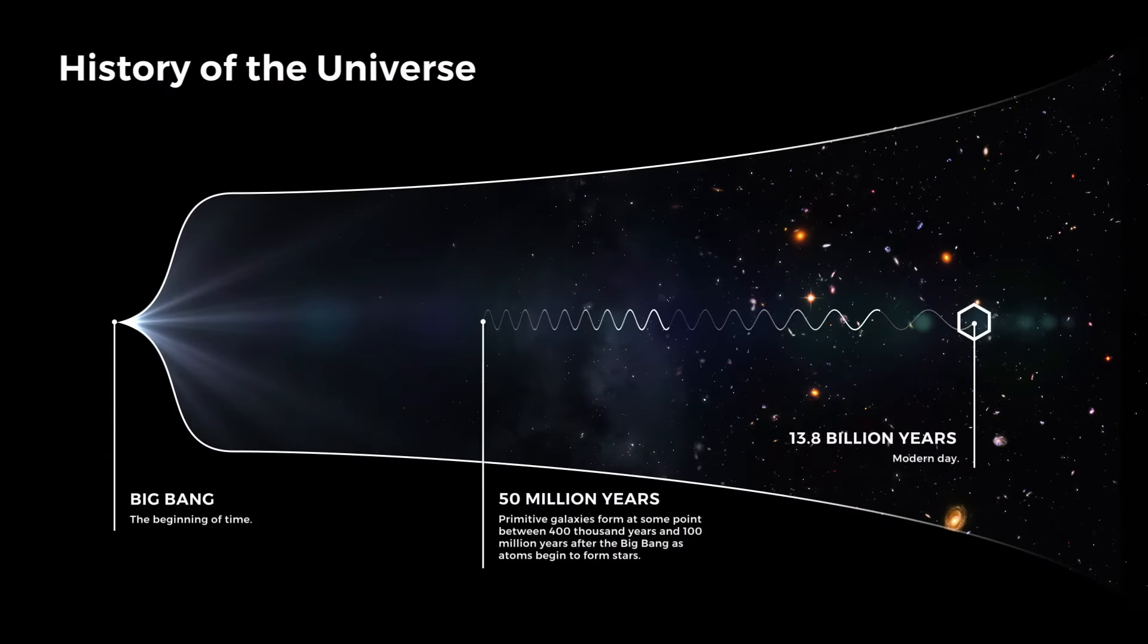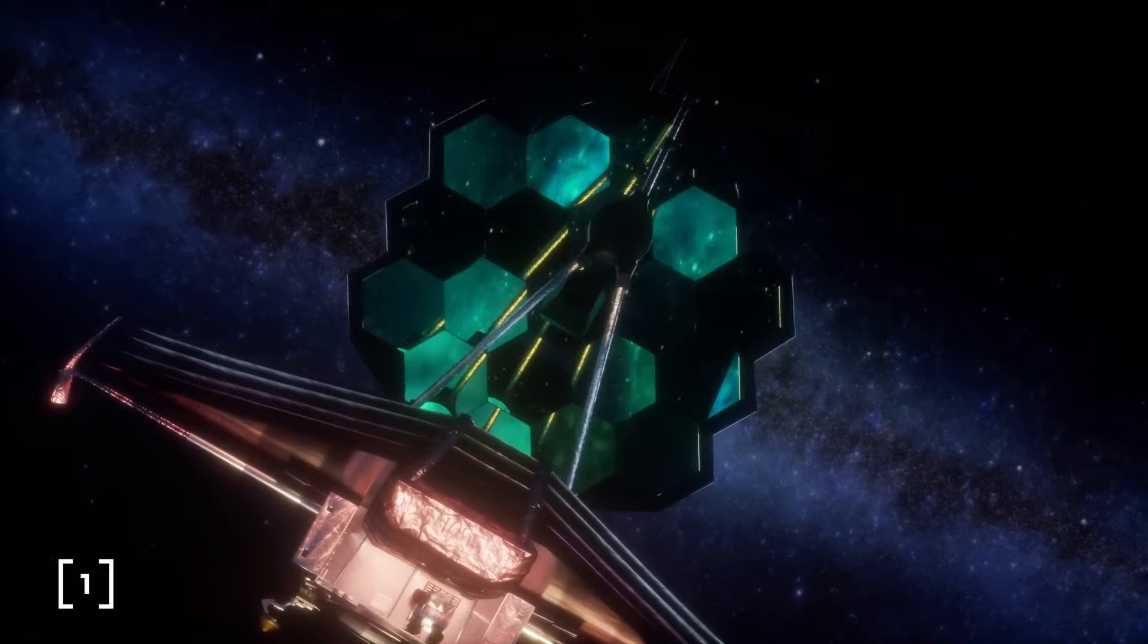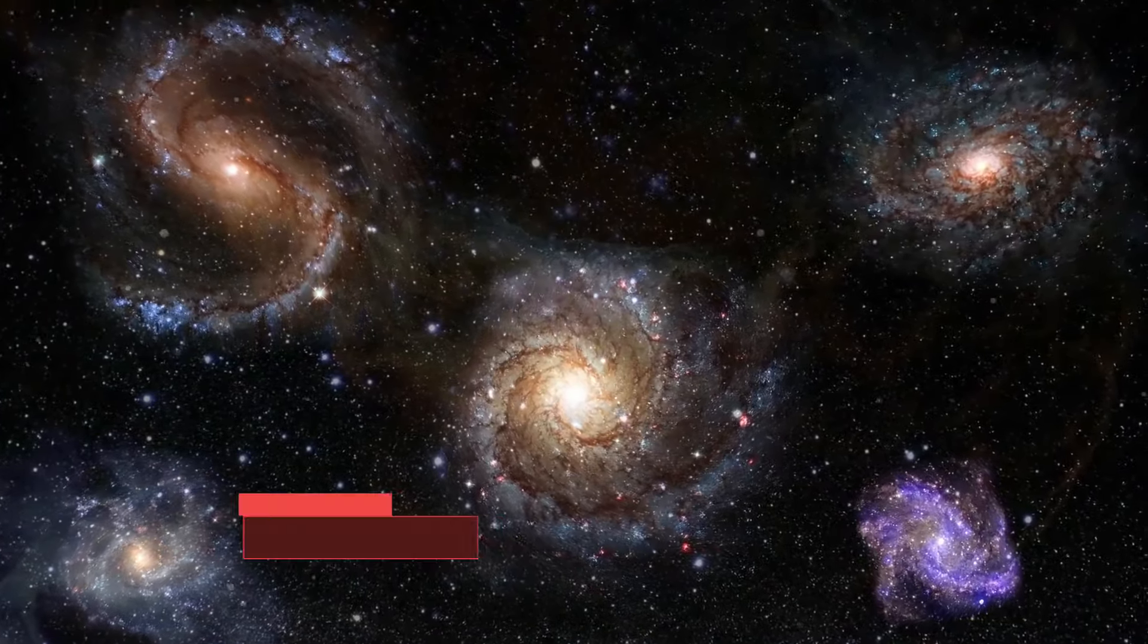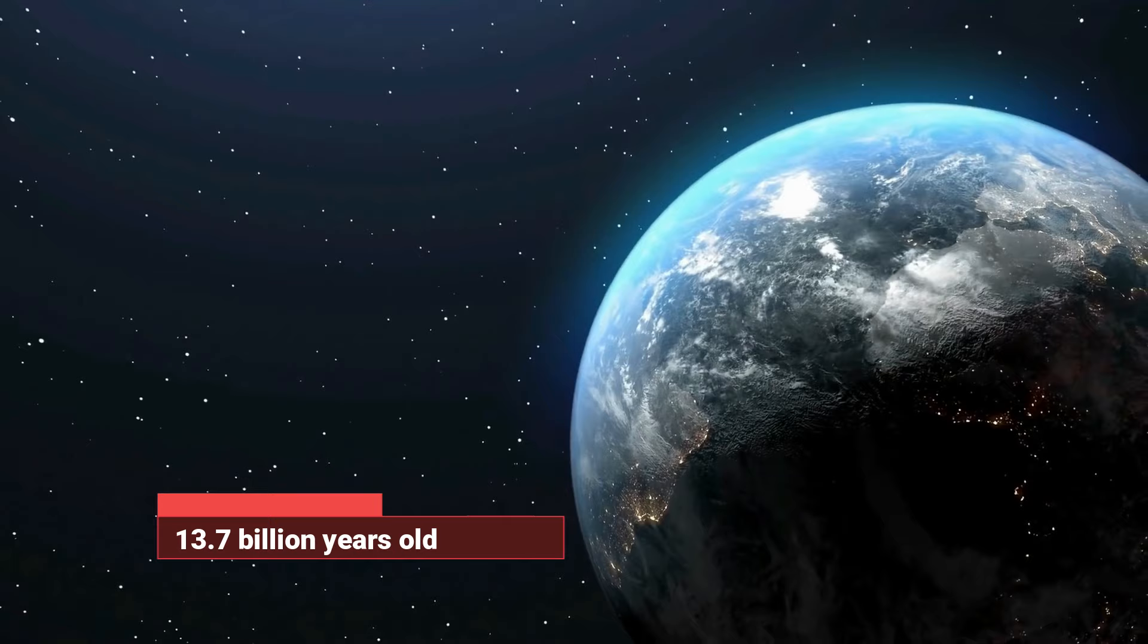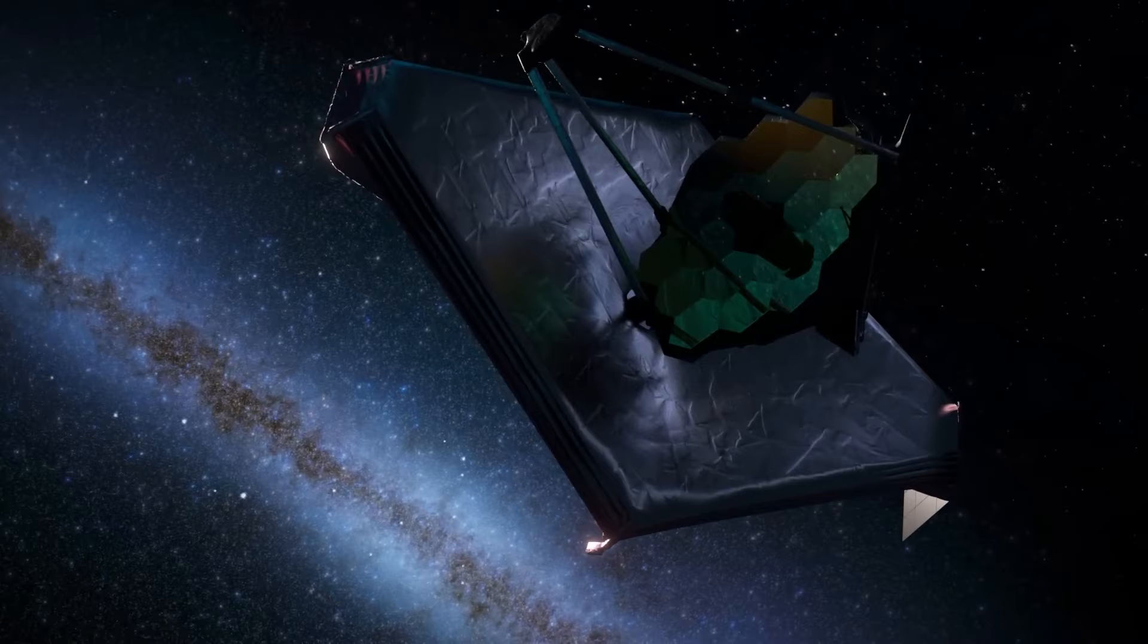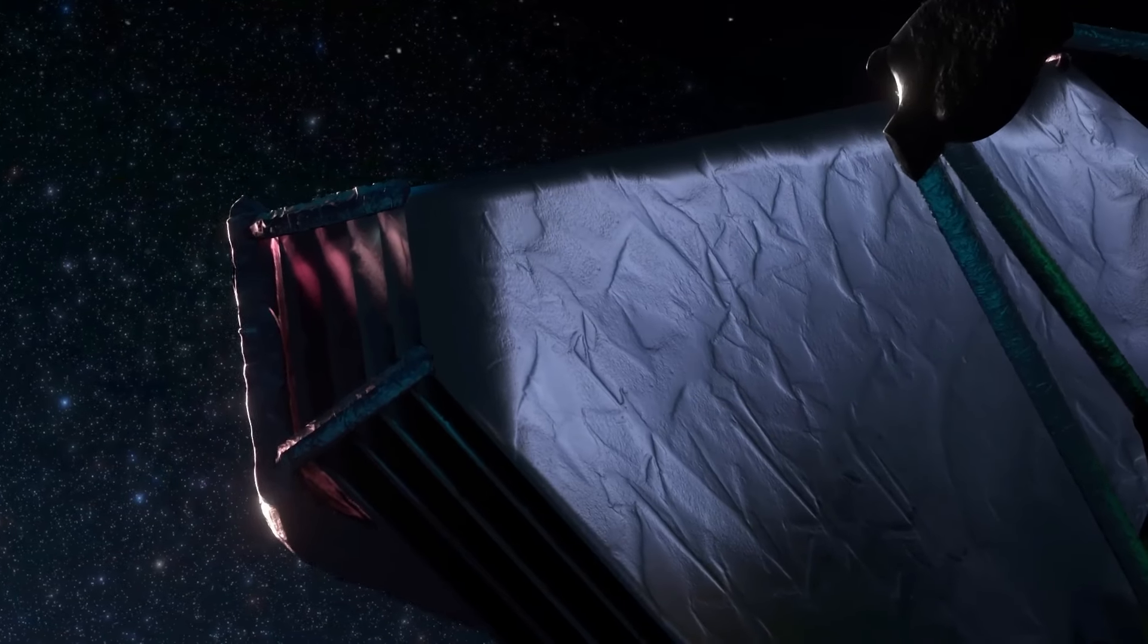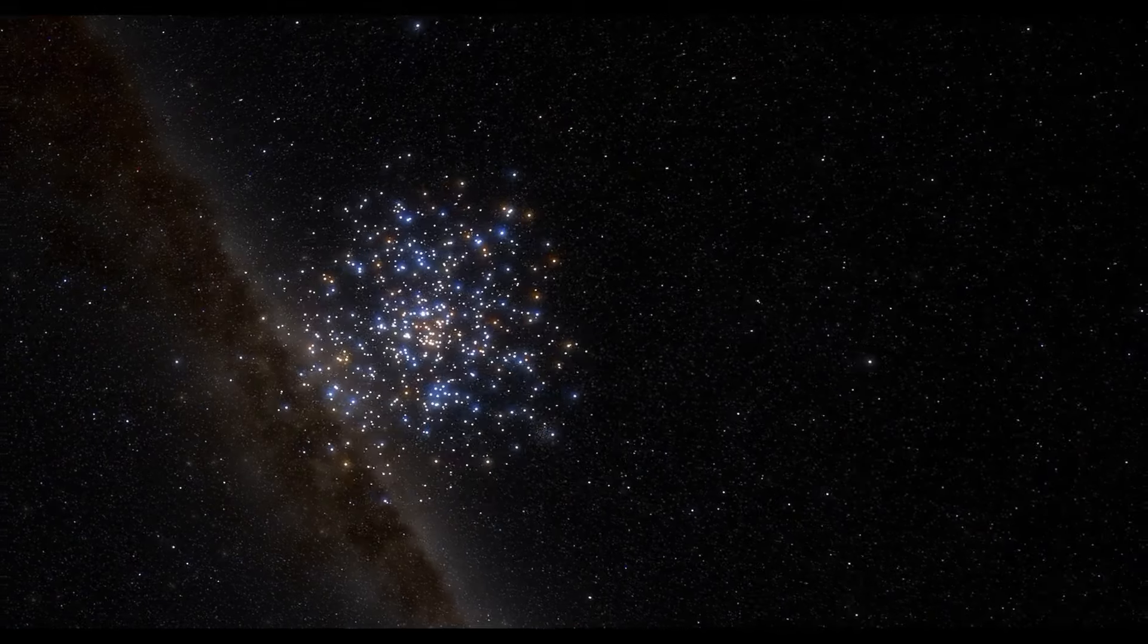The James Webb Telescope employs infrared light, invisible to the human eye, to observe the universe. By detecting faint light emitted by ancient stars and galaxies, this space-based telescope fulfills the long-awaited dreams of scientists like Brian Cox. Its unique vantage point allows us to peer into the distant reaches of the cosmos, reaching back a staggering 13.5 billion years ago, a time when the universe itself was just about 13.7 billion years old.